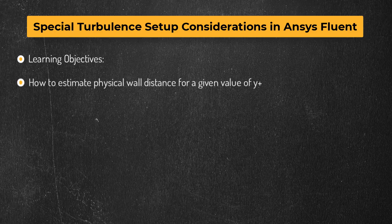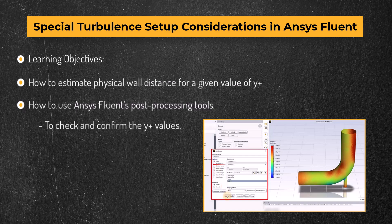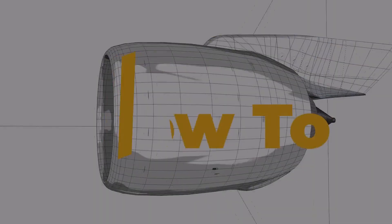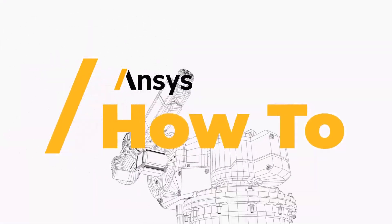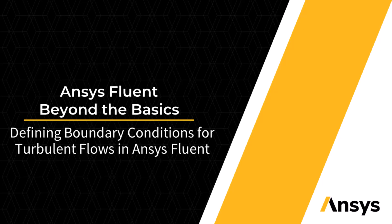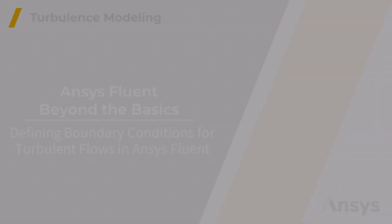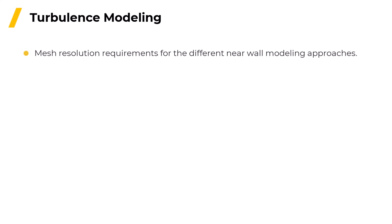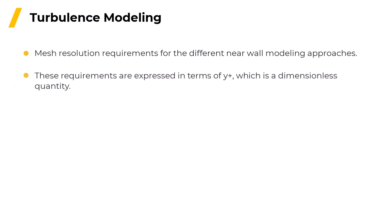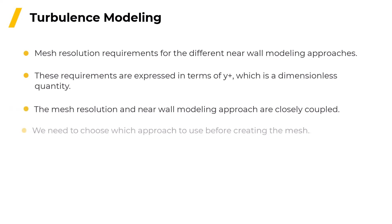We will learn how to estimate the physical wall distance for a given value of Y+, and how to use Fluent's post-processing tools to check and confirm the Y-plus values. We are going to learn how to set boundary conditions for turbulence. Previously, we discussed mesh resolution requirements for the different near-wall modeling approaches. These requirements are expressed in terms of Y+, which is a dimensionless quantity. Because the mesh resolution and near-wall modeling approach are closely coupled, we need to choose which approach to use before creating the mesh, and this means that we will have a target value for Y-plus in the wall-adjacent cells.